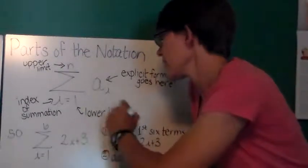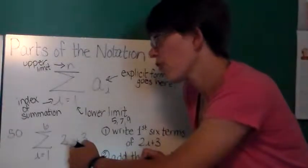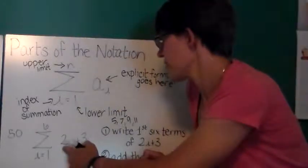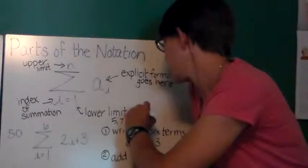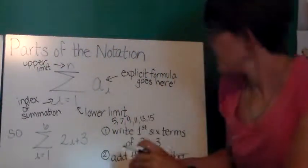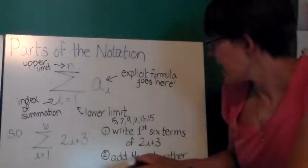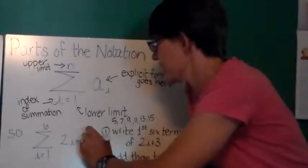If i equals 3, 6 plus 3 is 9. If i equals 4, 8 plus 3 is 11. If i equals 5 then I have 13. And if i equals 6 then I have 15. So I'm going to add these numbers together: 5, 7, 9, 11, 13, and 15 and I'm going to get my answer of 60.